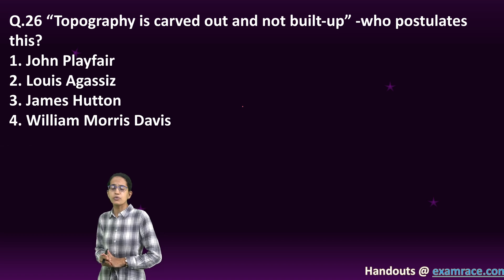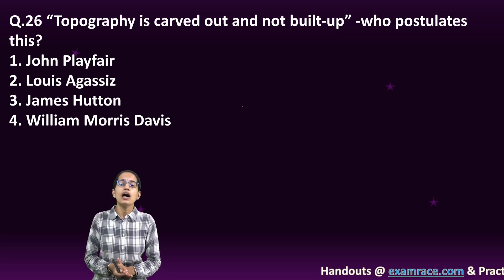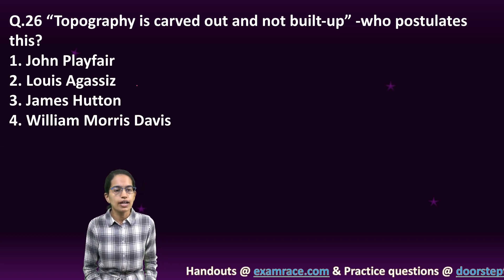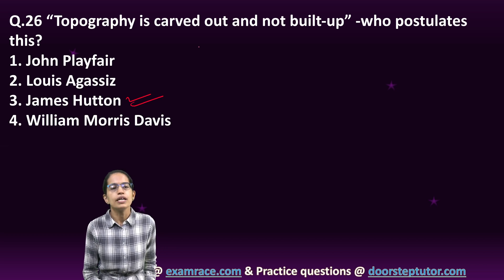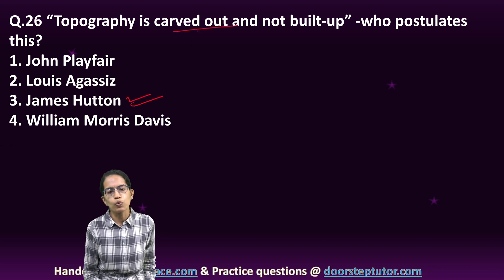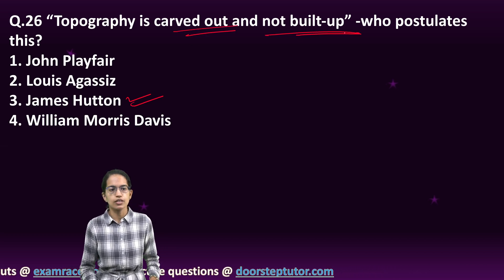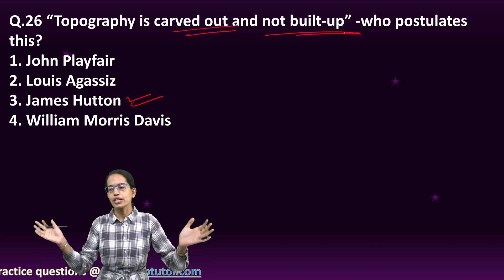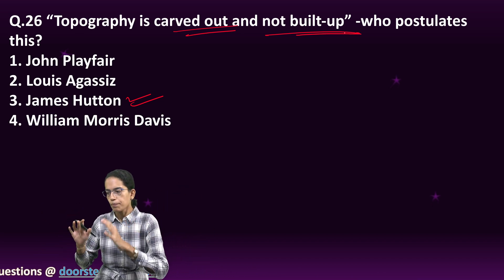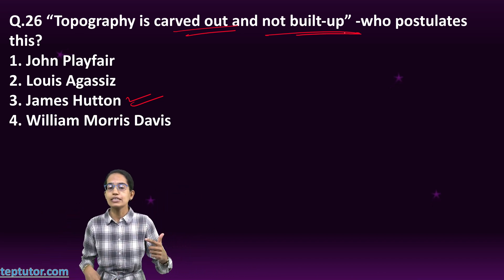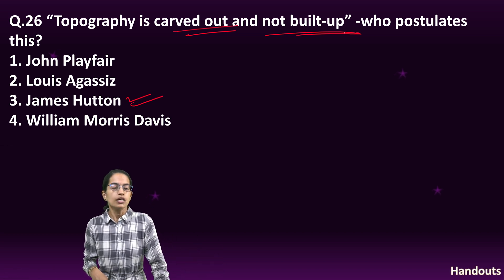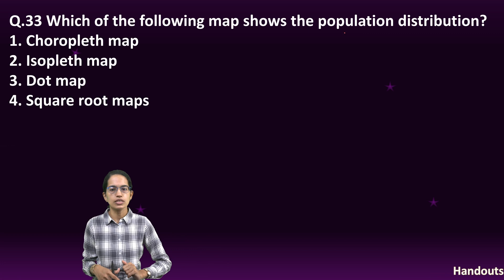Again, an important question — the postulate given by James Hutton: topography is carved out, not built up. That means over the years, through the process of weathering and erosion, topography is carved — it is not actually built. This was the basis that led to Hutton's uniformitarianism concept. That was the answer behind this question.